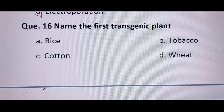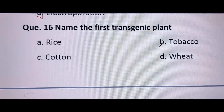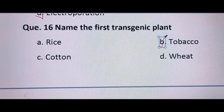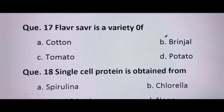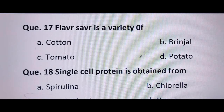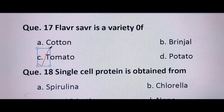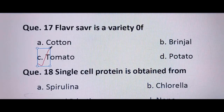Next question: name the first transgenic plant — options are rice, cotton, tobacco, and wheat. Tobacco was the first transgenic plant, so option C is correct. Next question: Flavr Savr is a variety of — cotton, tomato, brinjal, or potato. Flavr Savr is a variety of tomato, so C is correct. In this variety, the gene polygalacturonase is antisensed or inhibited, delaying ethylene production and increasing the shelf life of the tomato.